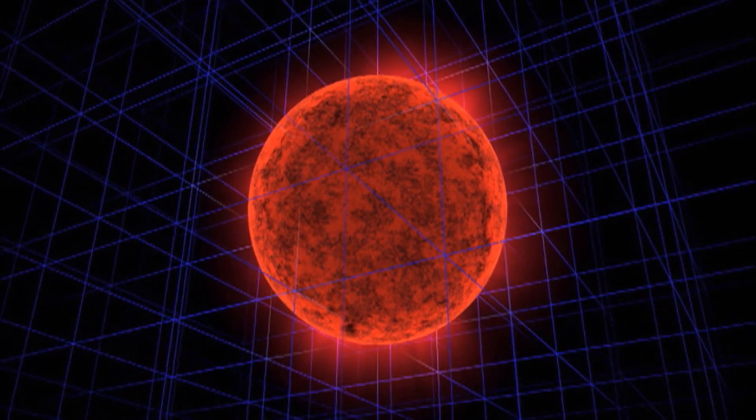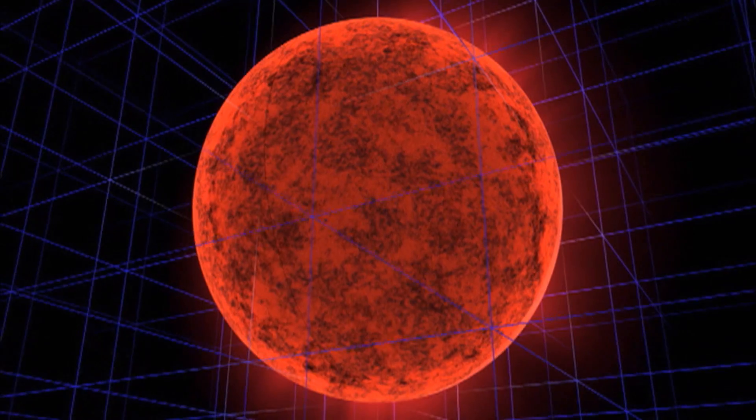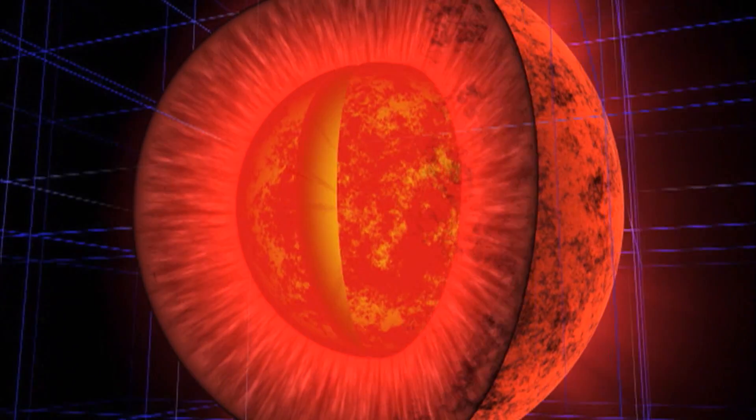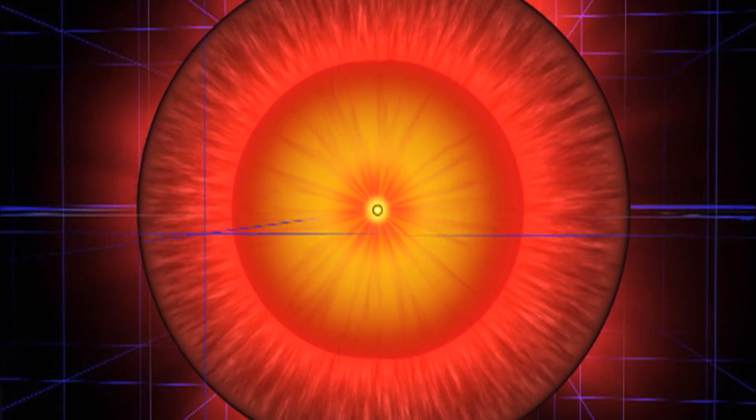Like hot air in a balloon, heat and light from these nuclear fires creates an outward pressure that prevents the star's massive outer layers from collapsing inward.